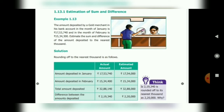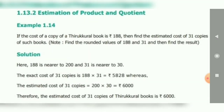Add the values to find the total sum. The actual total is 32 lakh 87 thousand 9 forty. In estimation, we round off to the nearest thousand as required by the question. The estimated answer is 32 lakh 88 thousand. Next: estimation of product and quotient.